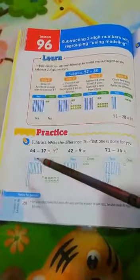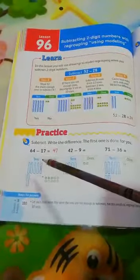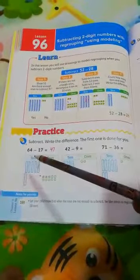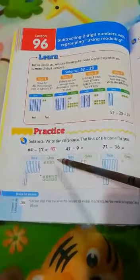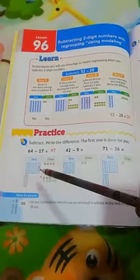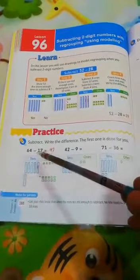For example, 64 minus 17. First we will represent 64. We represent ones and tens. We represent ones by using small cubes and we represent tens by using sticks.